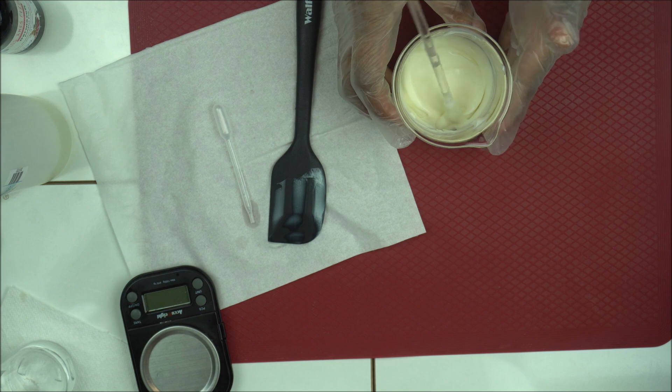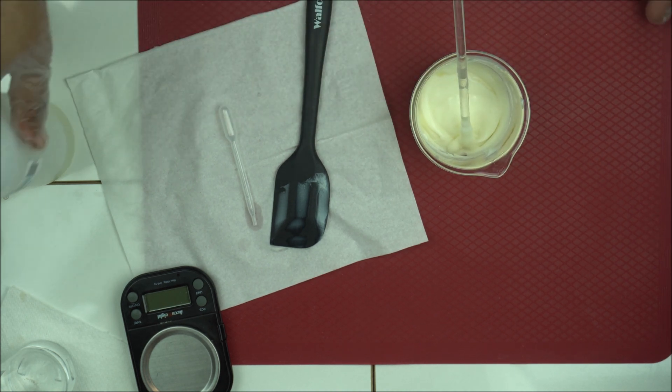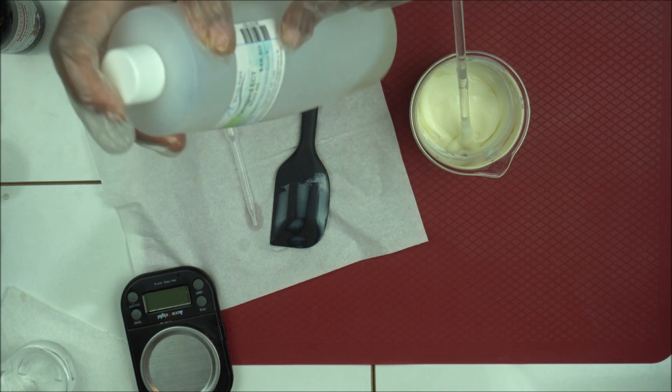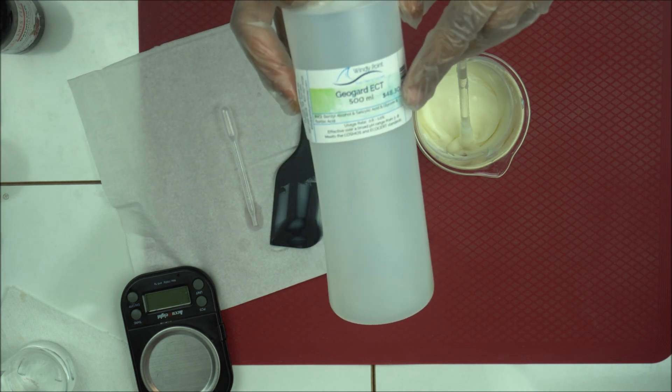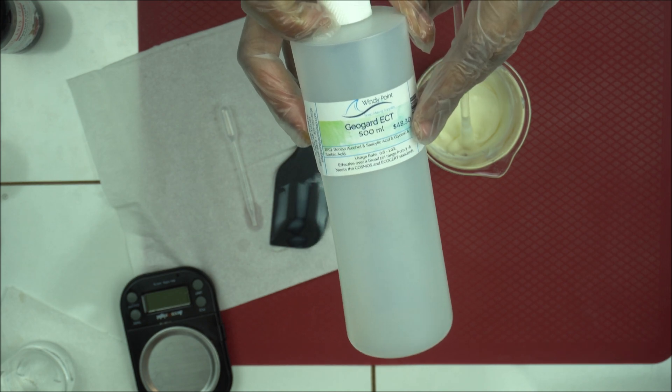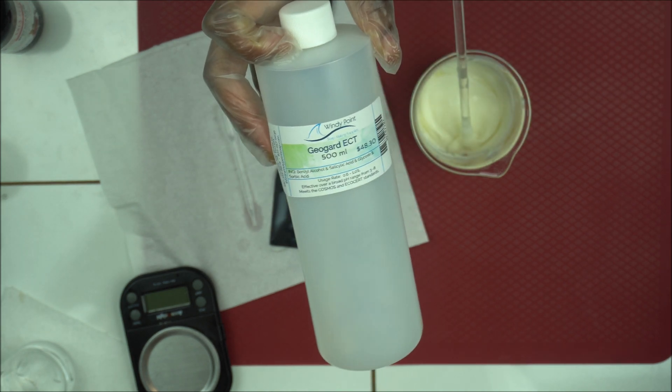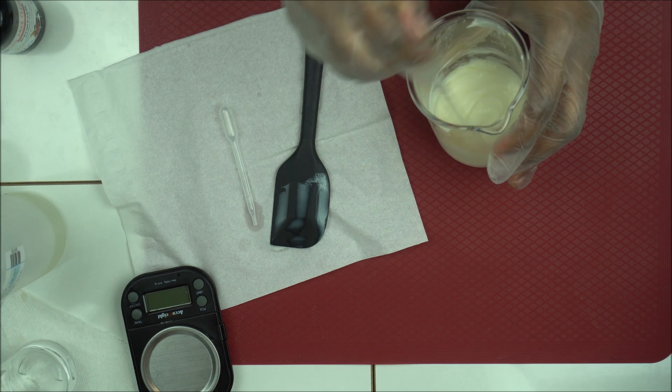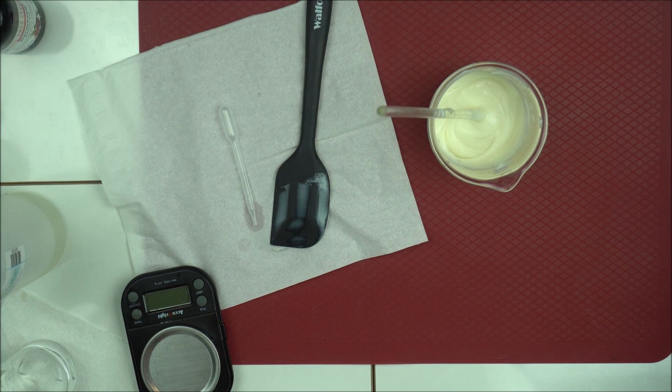Make sure you check the pH of your lotion. Remember, the recommended pH for using Geogard ECT is 3 to 8. So it has to be between 3 and 8. Make sure you check the pH of your lotion to make sure it conforms to that.